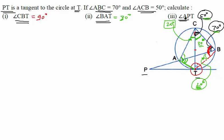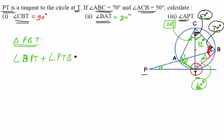Now let us move on to the third part: angle APT. To calculate this angle, the easiest process would be to look at triangle PBT. In triangle PBT, applying the angle sum property of a triangle, we can write: angle BPT plus angle PTB plus angle TBP should equal 180 degrees. We need to find angle BPT. Angle TBP is already known to be 20 degrees, so that is taken care of.